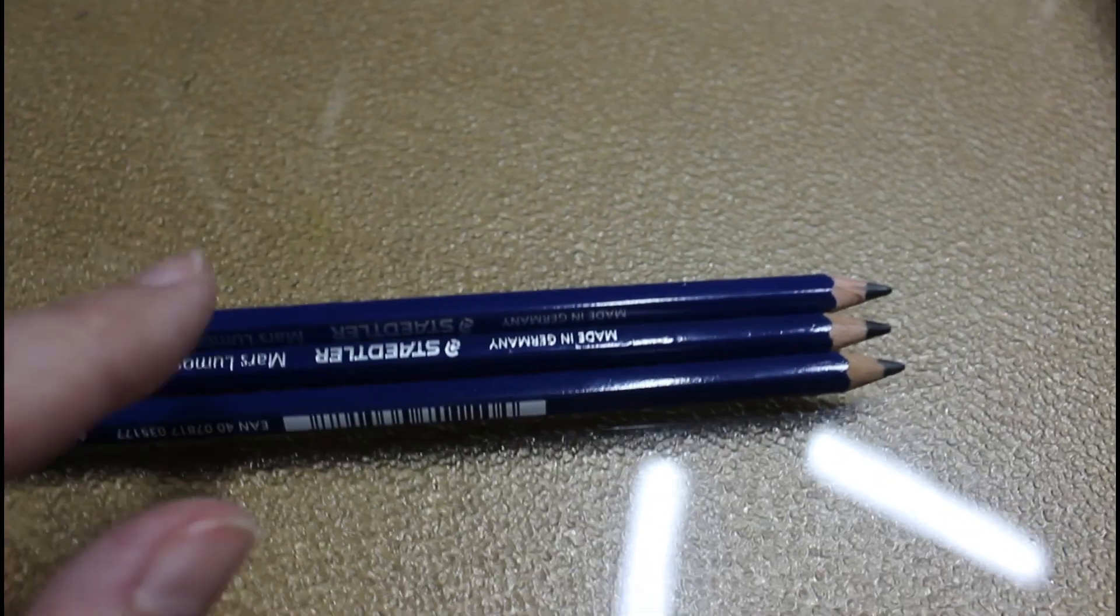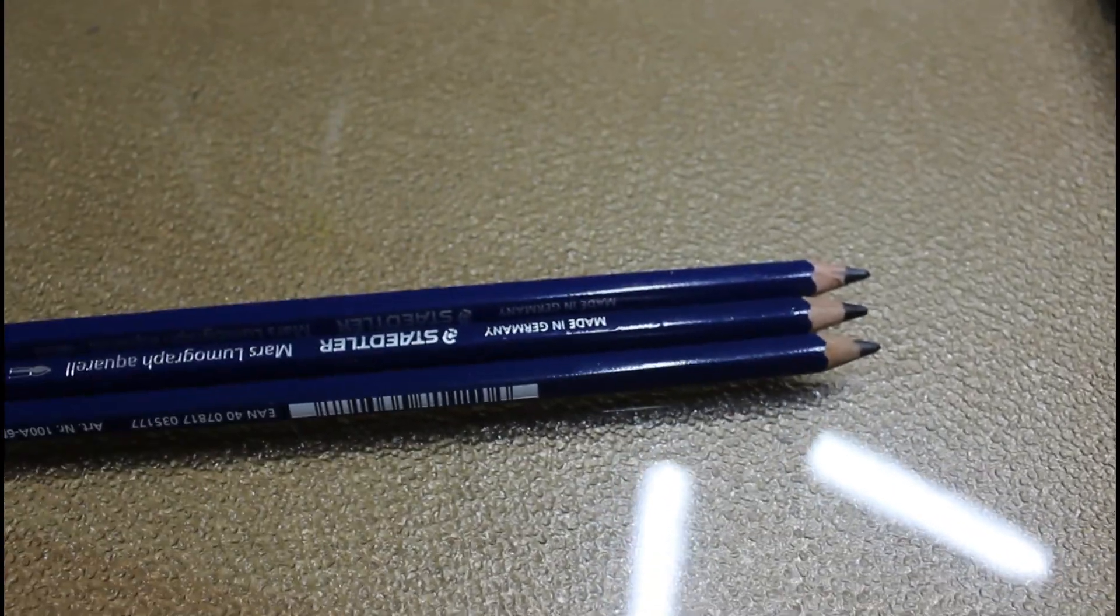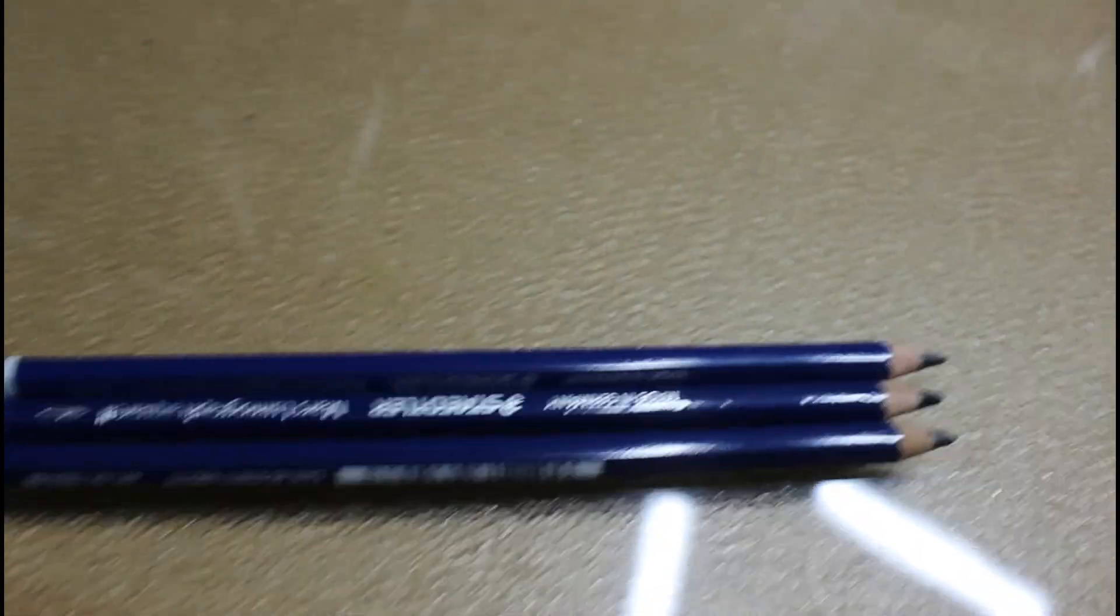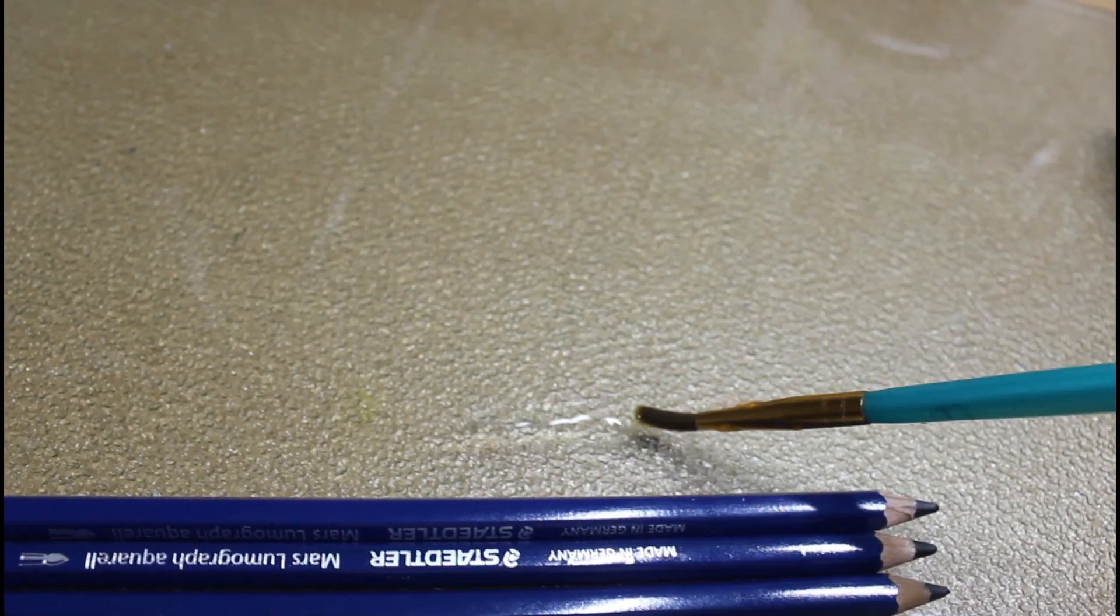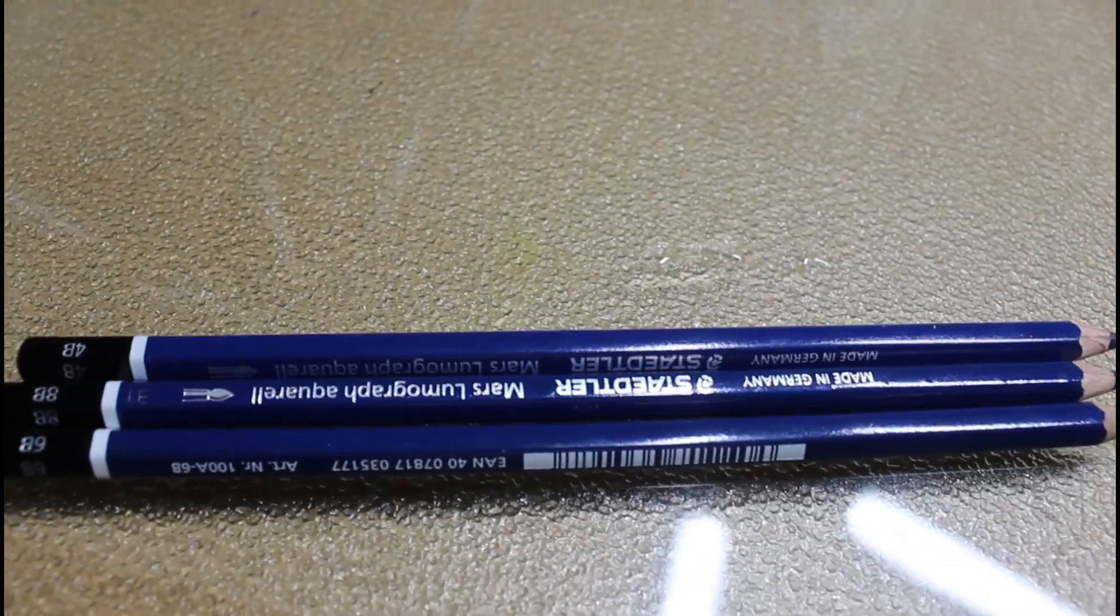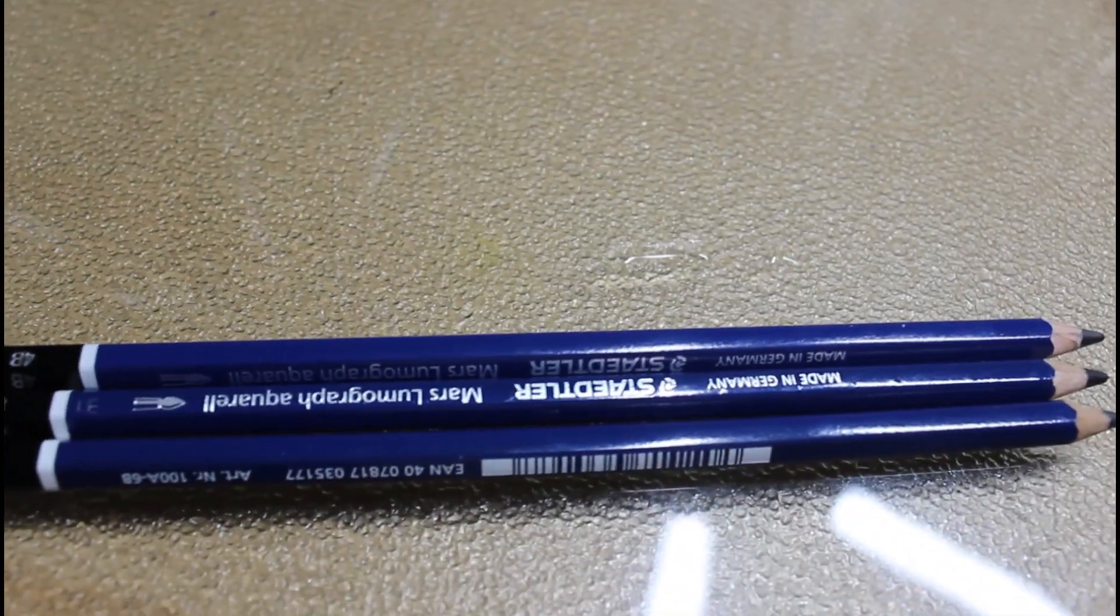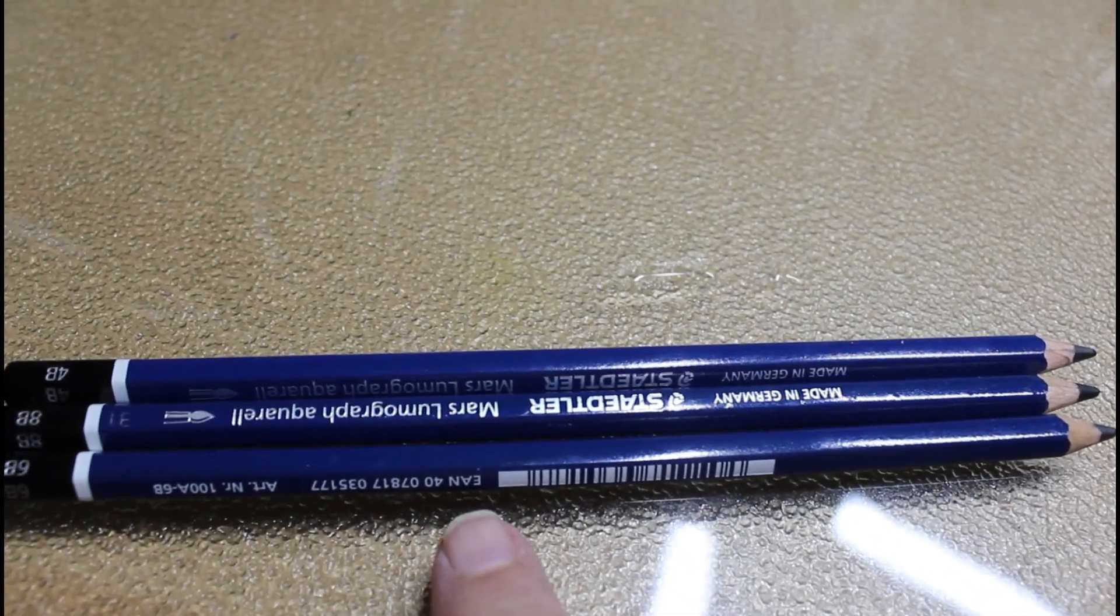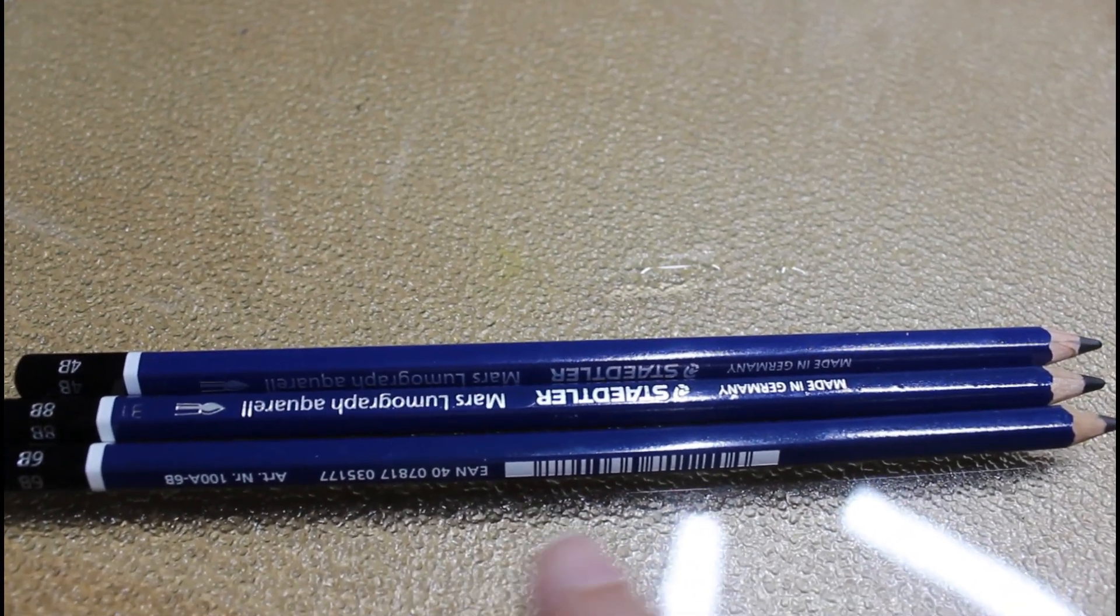And you just draw with them like you normally would. And then you take your water, whatever brush you have, and you paint over the mark you just made. And it kind of turns into this watercolor graphite paint. And it's really cool. So I thought I would do my tern today with these pencils and maybe one or two other little watercolor pencils as well. So let's get started.